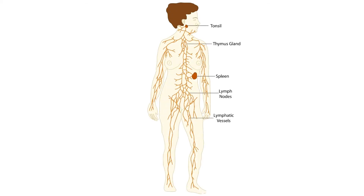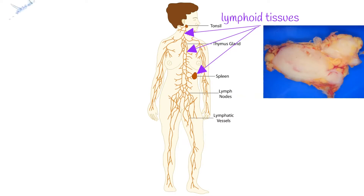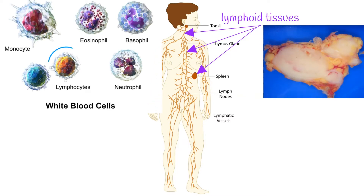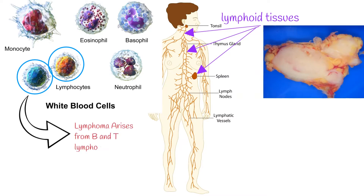Lymphoma is not a single disease. Lymphoma is a group of malignant neoplasms which arise from white blood cells, specifically from B and T lymphocytes. Lymphoma originates from the lymphoid tissues, mainly in the lymph nodes. Lymphoma is now the fifth most common cancer in the United States.